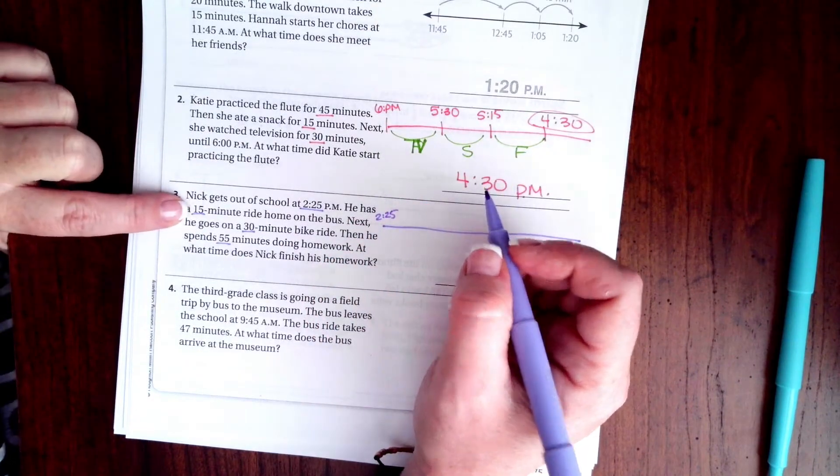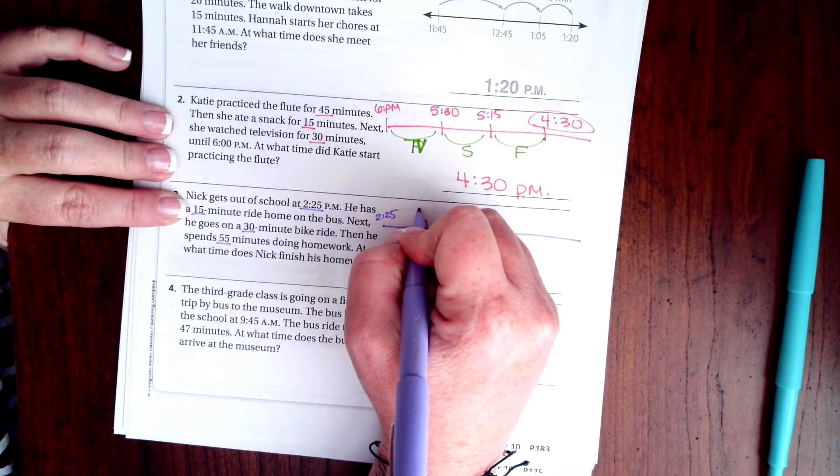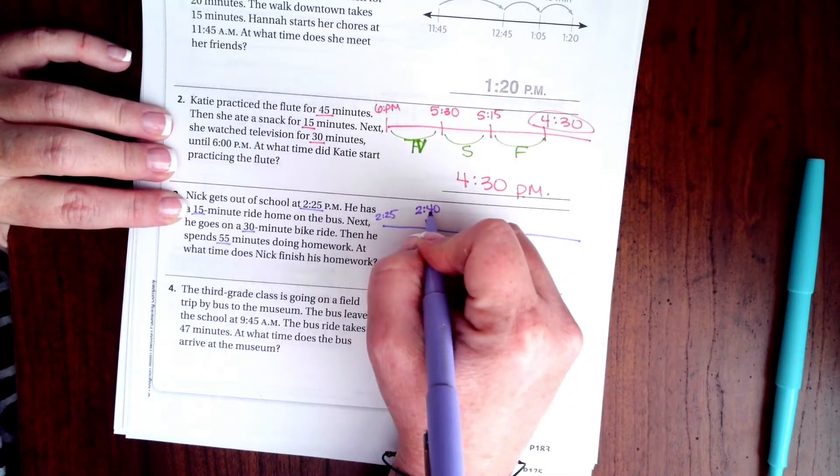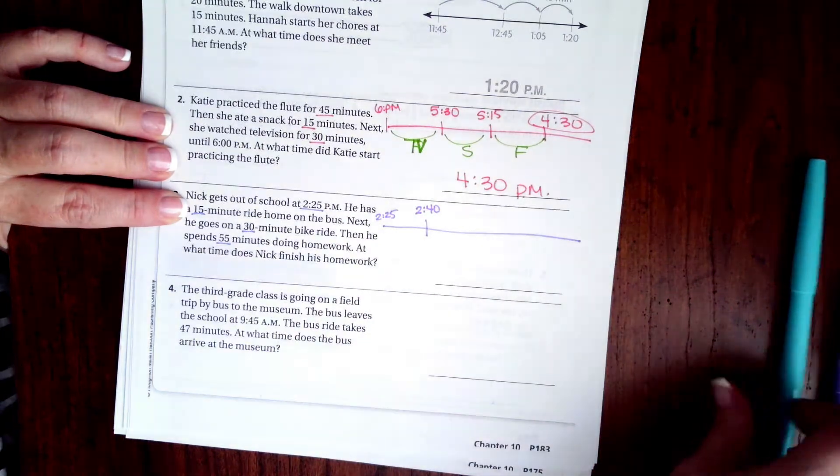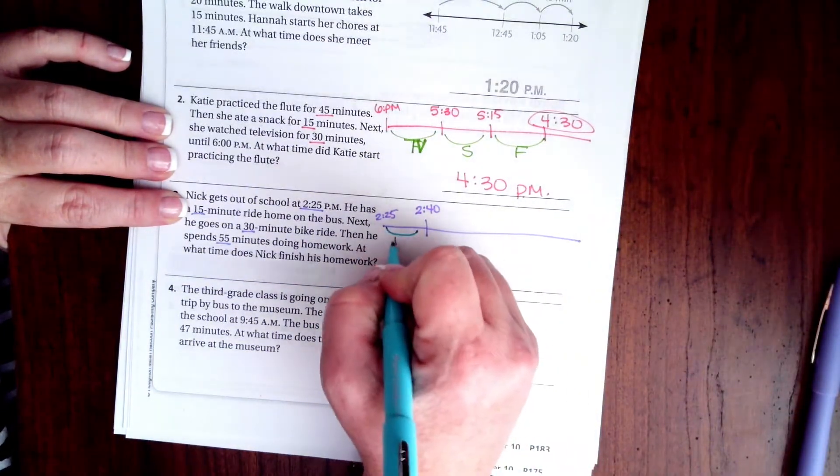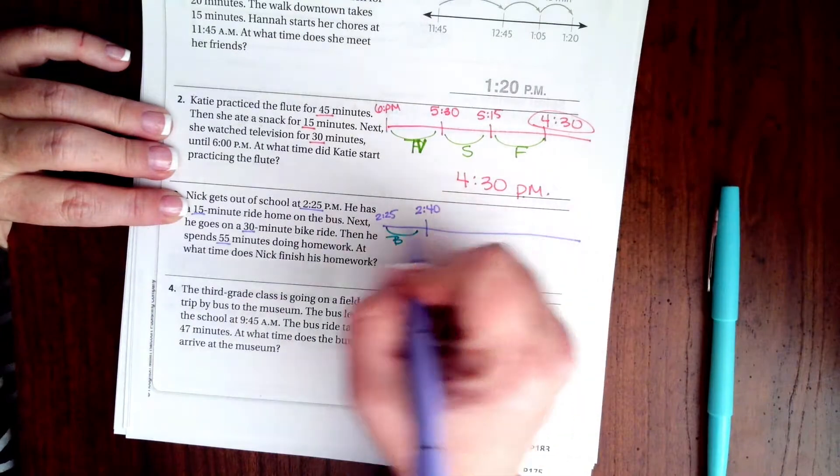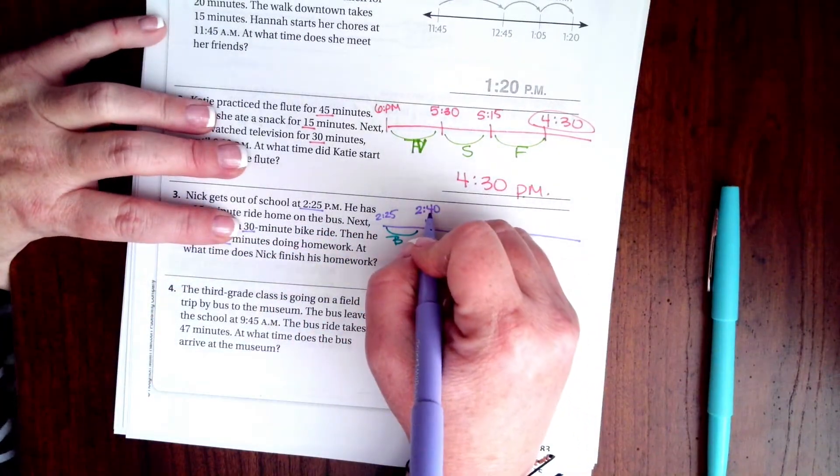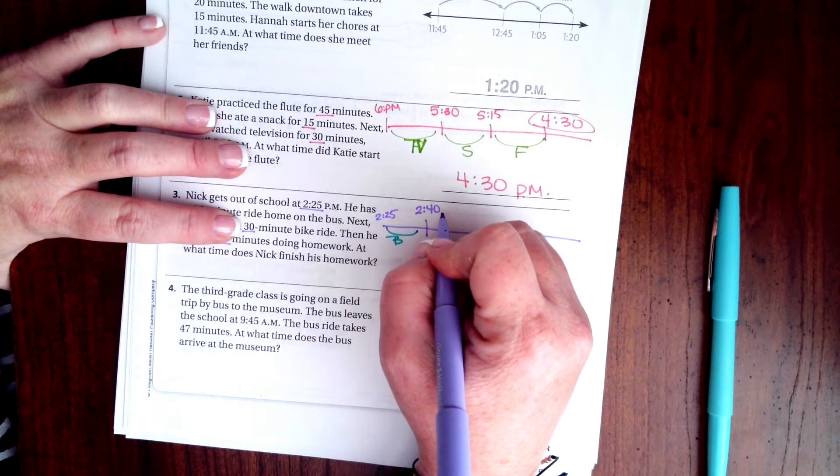We're gonna start with our 15 minutes, which lands us at 2:40 because 25 and 15 is 40. That's our bus ride. Next we're gonna go 30 more minutes. Well, that would be 2:70 except 70 doesn't exist.